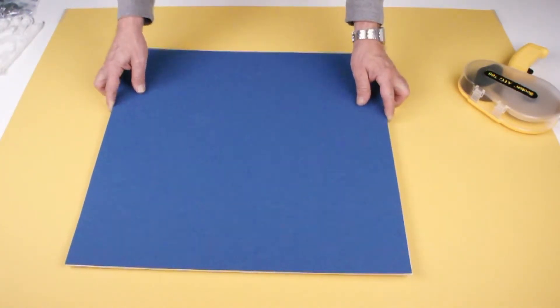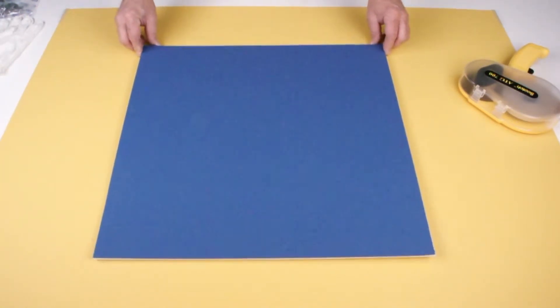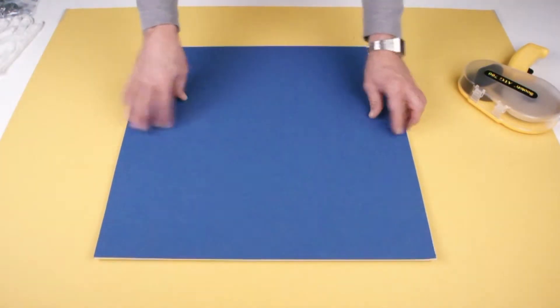Now place your matte board on the surface of your foam board, line up, and smooth thoroughly with your hands.